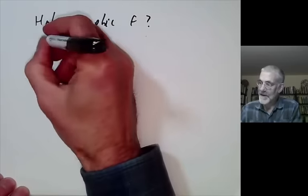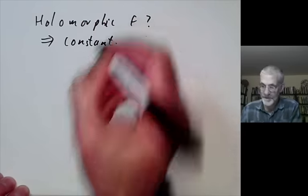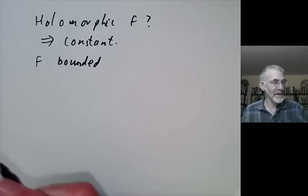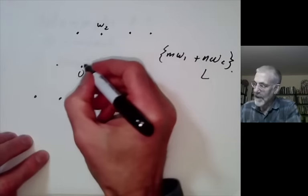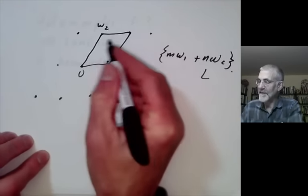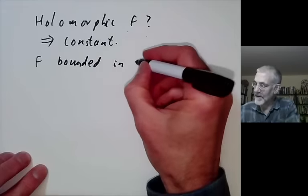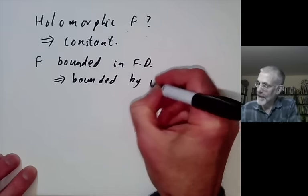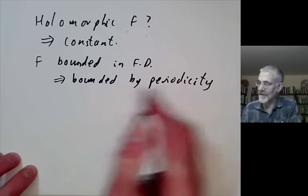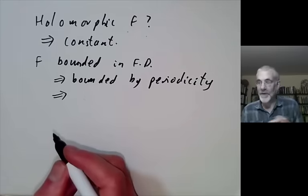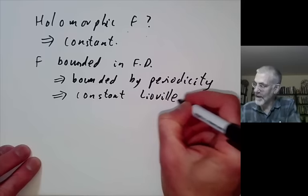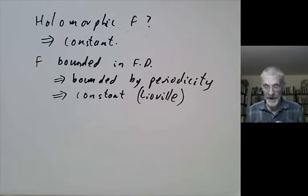The answer is these all have to be constants, so they're not very interesting. The reason is that f is bounded in the fundamental domain. A fundamental domain is a compact region, so f being continuous is bounded in it. Since it's periodic, it must be bounded everywhere. And if a holomorphic function is bounded on the whole plane, it must be constant — by Liouville's theorem from complex analysis.